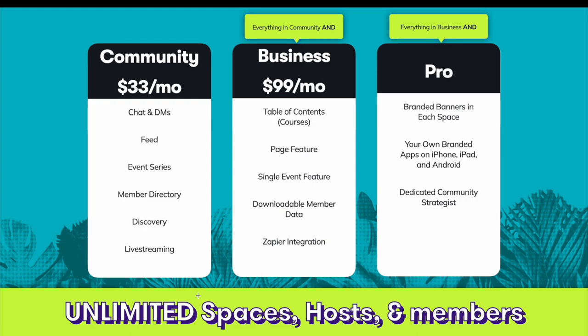Mighty has three paid plans. When billed annually, there's the community plan at $33 a month and the business plan at $99 a month. There's also Mighty Pro. All of Mighty's plans come with unlimited spaces, hosts or admins, and members. If you want to be able to create and sell courses, you have to be on the business plan, but from there, you'll be able to have an unlimited number of students, courses, instructors, moderators, and dedicated course communities. So as a host of a Mighty Network, you're not being charged on how much you scale or grow. It's just a flat fee tier depending on the features that you want.